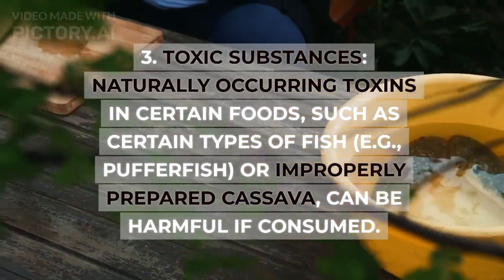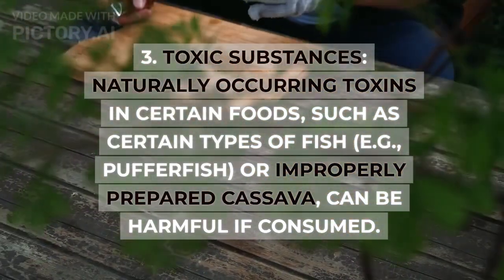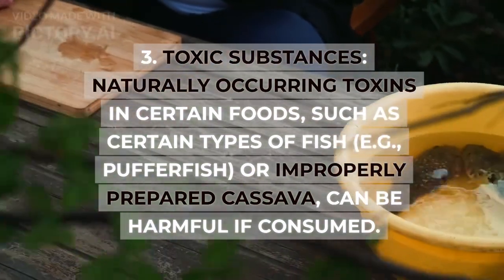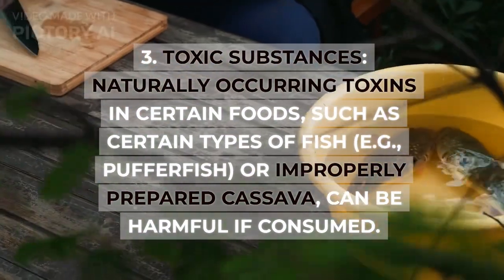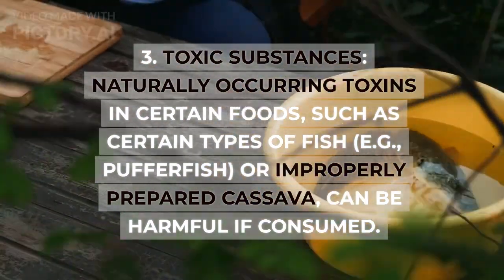Toxic substances: naturally occurring toxins in certain foods, such as certain types of fish, for example pufferfish, or improperly prepared cassava, can be harmful if consumed.